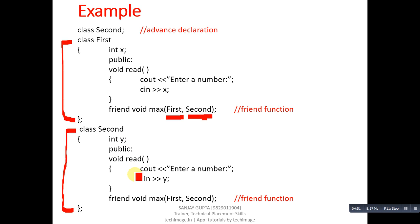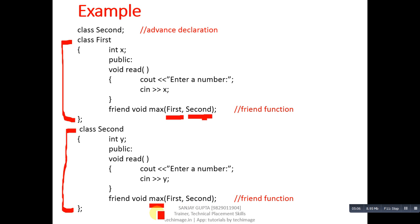In the second class, variable y is declared as private. The read method reads a value into y. Then max is again declared as a friend function, receiving two arguments — one for the first class and another for the second class. So max is declared in both classes with the friend keyword in its declaration.